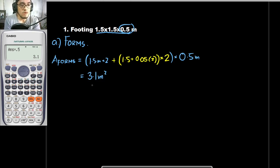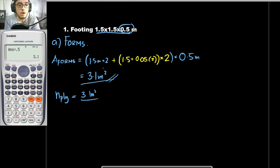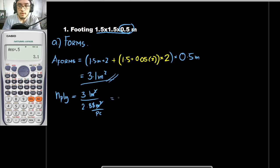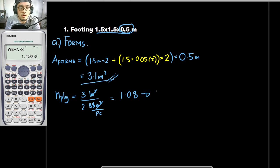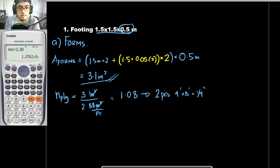For us to get the number of plywoods needed to cover this area, the number of plywood is equal to the area of the form — 3.1 square meters — divided by the area of 1 plywood, which is 2.88 square meters per piece. So 3.1 divided by 2.88 equals 1.08, which we round up to 2 pieces. We would use 2 pieces of 4 feet by 8 feet by ¼ inch plywood. This is for 1 footing only.